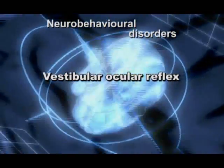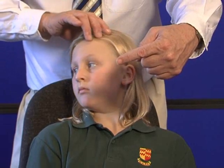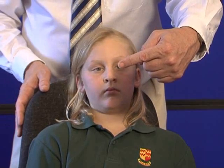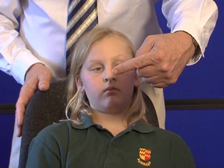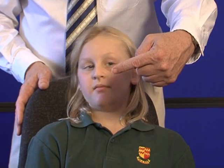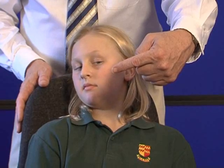Vestibular ocular reflex. The patient fixes focus on the practitioner's index finger about 18 inches away. The patient slowly turns the head to the right as far as they can, still focusing on the finger, and repeats ten times. Test a strong indicator muscle, in this case on the right side.